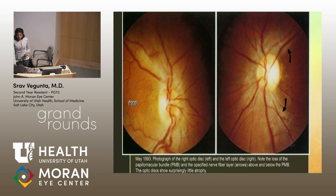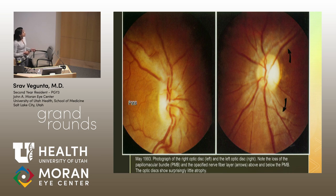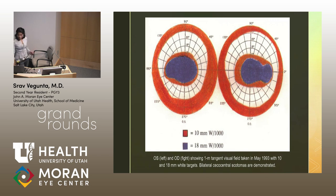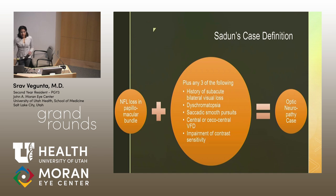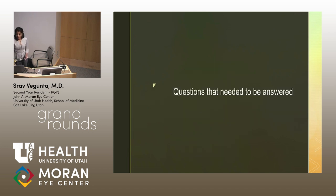One of the most striking features on physical exam was a normal-looking optic nerve head with a wedge-shaped temporal defect with pallor involving the papillomacular bundle, while the surrounding nerve fiber layer was actually swollen. Another striking feature was cecocentral scotomas and central scotomas. His case definition required nerve fiber layer loss, especially in the papillomacular bundle, plus any three of: subacute vision loss, color vision problems, irregular eye movements, visual field defects, and contrast sensitivity issues.